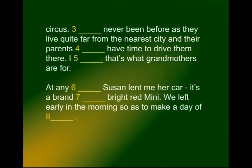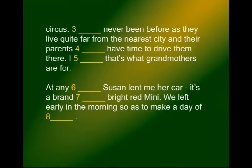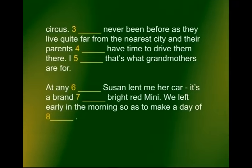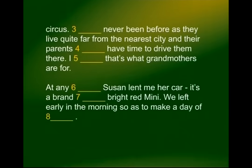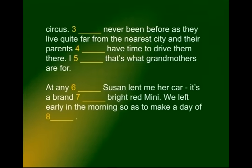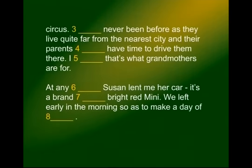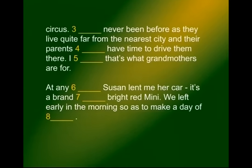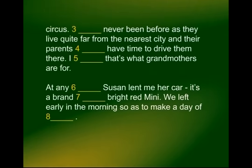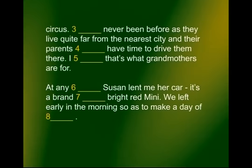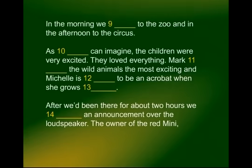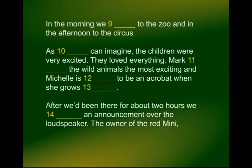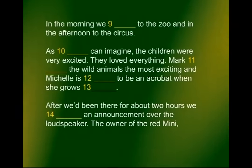'It's a brand — bright red mini.' It has to be 'new' — a brand new bright red mini. 'We left early in the morning so as to make a day of —.' The sentence ends there — it has to be 'it.' They want to make a day of it. 'In the morning, we — to the zoo, and in the afternoon to the circus.' It has to be the past tense — 'went.' We went to the zoo.